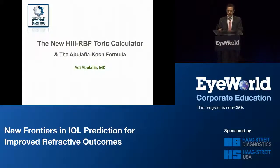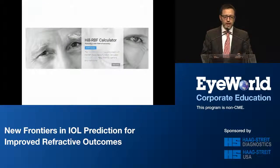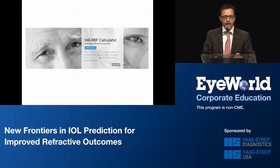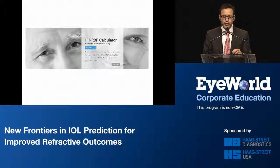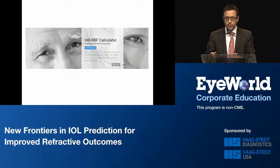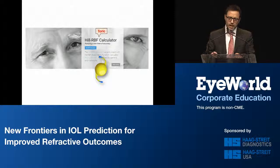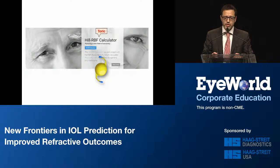Thank you Doug. By now you've all heard what you need to know about the Hill RBF calculator and its prediction accuracy. However, one should remember that many of our cataract patients will suffer from corneal astigmatism as well, which should be addressed during cataract surgery and preferably with toric IOLs. So what is more obvious than to have a Hill RBF toric calculator? This calculator should be available on the next LENSTAR update, so I'm really looking forward to that.